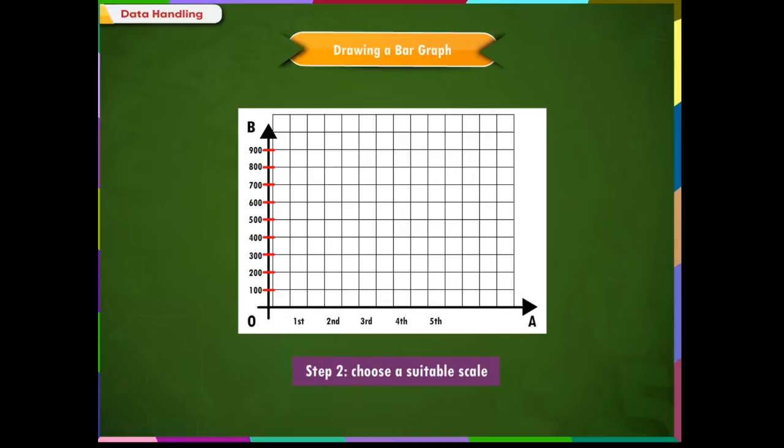We can stop at 900 as we don't have number of mattresses beyond 900. So, the scale we have chosen here is 1 cm equal to 100 number of mattresses along the vertical axis. Next, mark the weeks on the horizontal axis.